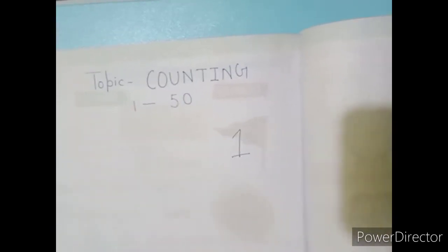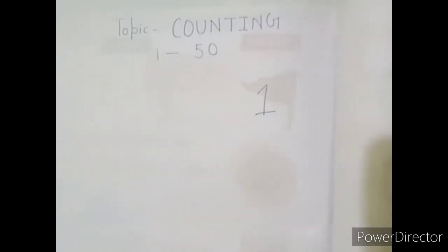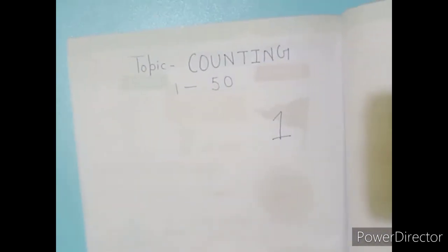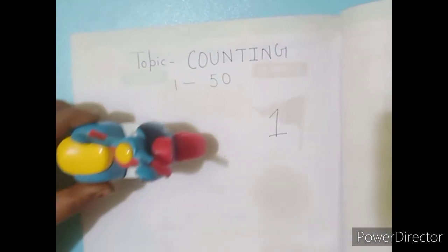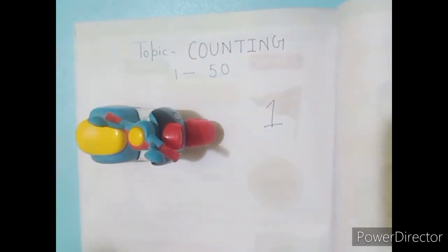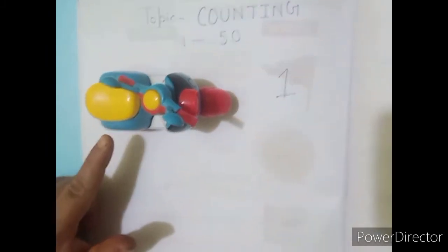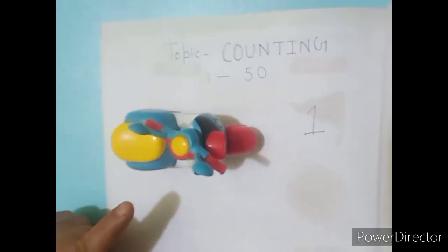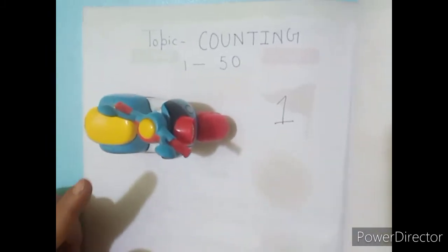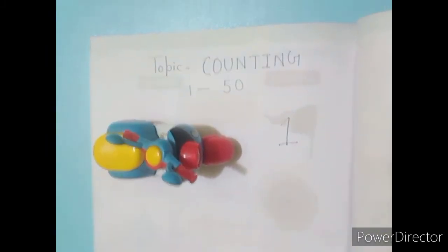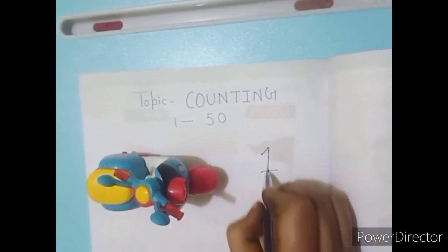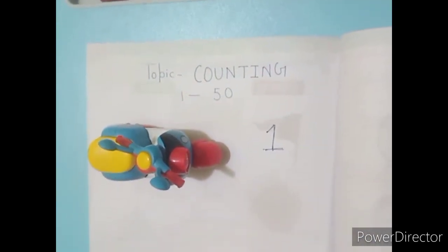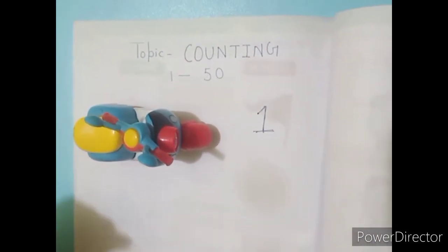Look here, I am showing some things. Tell me, what is this? This is a toy. How many toys? One. That's right — one.